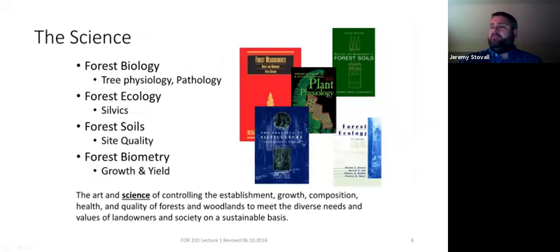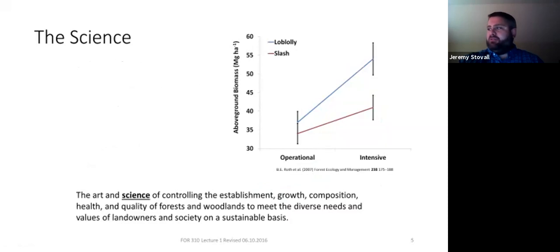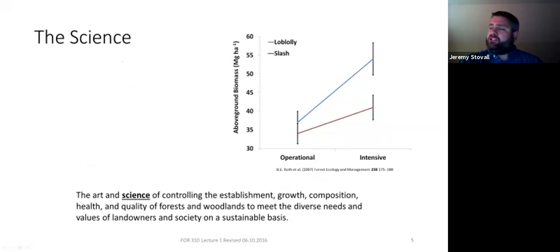Starting with the art and science of our definition: with the science, you have access to journal articles and scientific disciplines that inform silviculture. Here's one example — a Forest Ecology and Management article comparing loblolly pine and slash pine above-ground biomass in metric tons per hectare at operational vs. intensive silviculture levels. Intensive silviculture added more herbicides and more fertilizer. With slash pine managed operationally, you can't tell it apart from loblolly — the error bars overlap. So if you're doing operational silviculture, it probably doesn't matter which species you plant, based on these data.